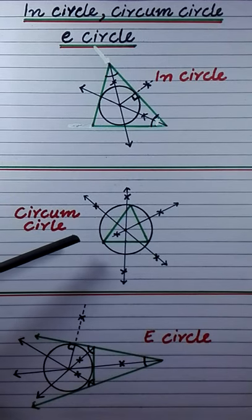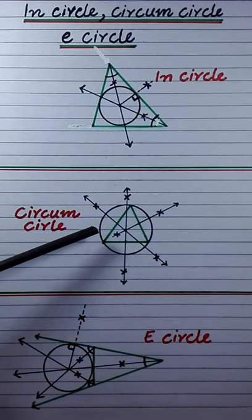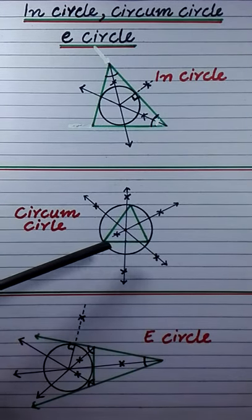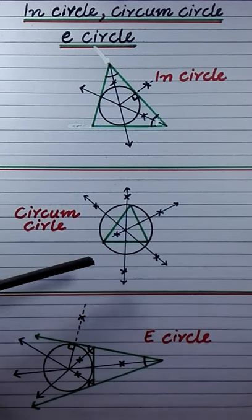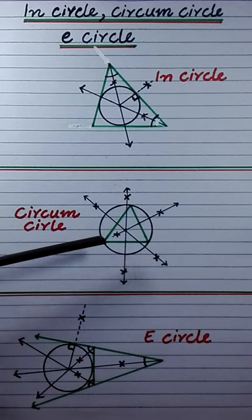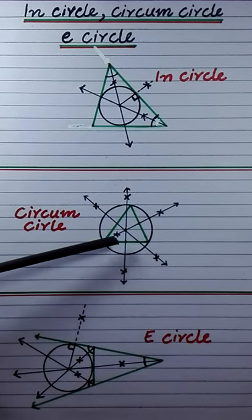Now, if a circle covers a triangle completely and it passes through all its three vertices, then the circle is called a circumcircle. To draw a circumcircle, first we have to draw right bisectors of the sides of the triangle.